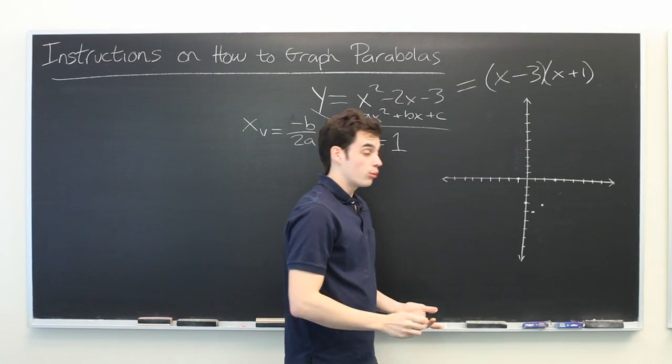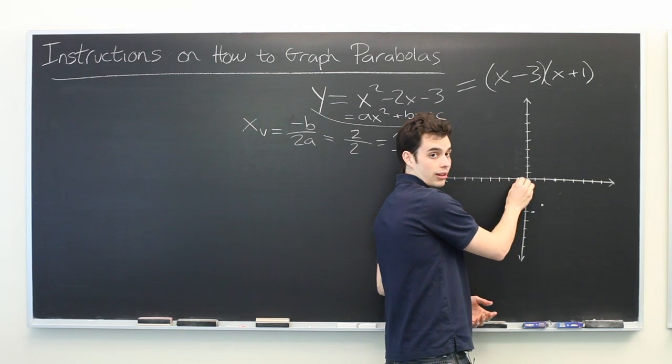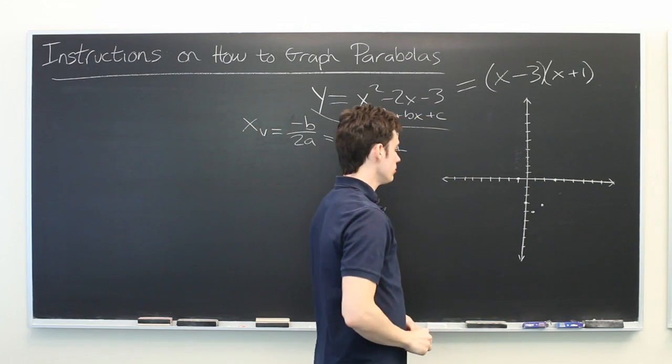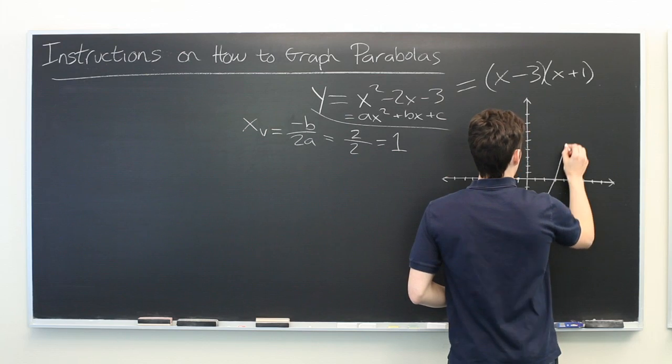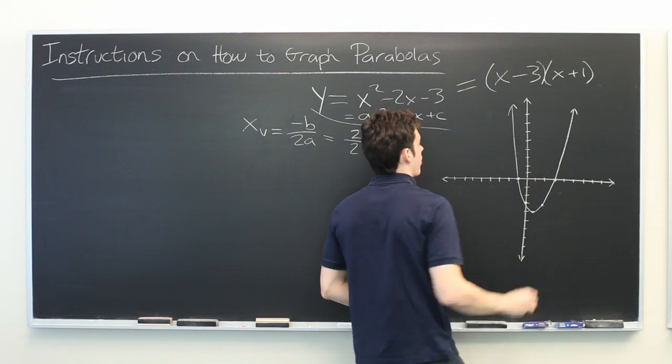And we see that that rule also holds true for our x-intercepts. Four units above, two to the left. Four units above, two to the right. So here we have a good collection of points. We connect them with a smooth curve. We've got ourselves a parabola.